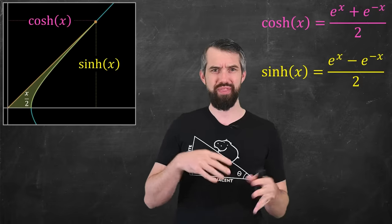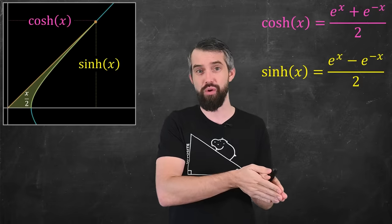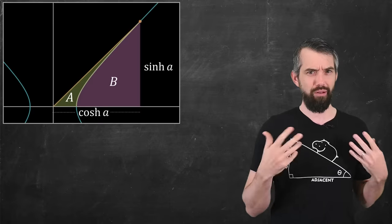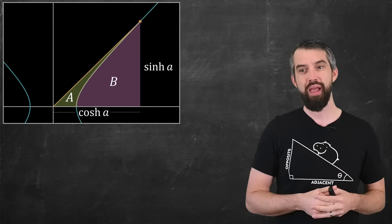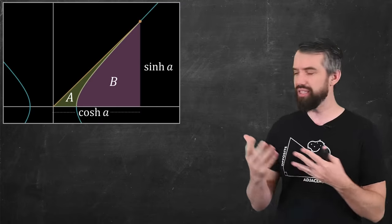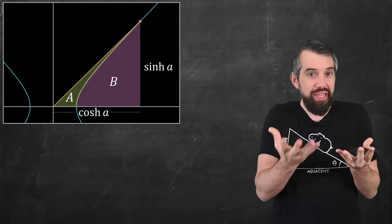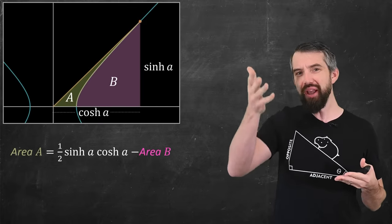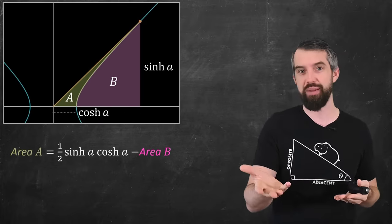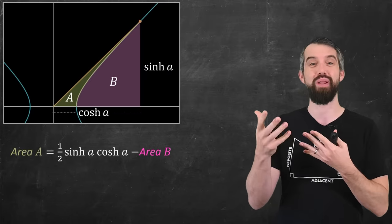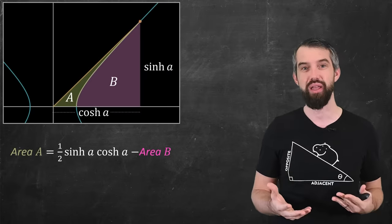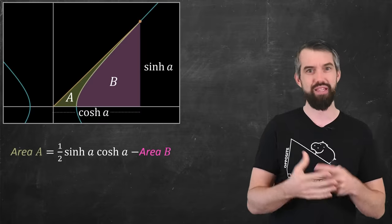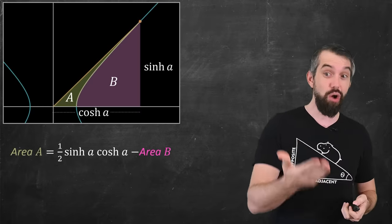Are these two definitions the same? I showed that the exponential-based versions satisfy the hyperbola equation, but do they have this nice area property? To figure that out, I need to get a handle on what this area really is. I'll note that I can add a second region B such that A and B together form a right triangle. So the area of A is the area of the triangle — one half base times height, which is hyperbolic cosine times hyperbolic sine over 2 — minus the region B. It's easier to compute B and then subtract than to go for A directly.